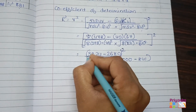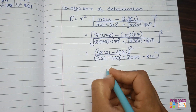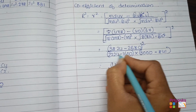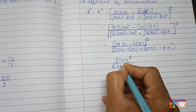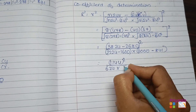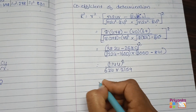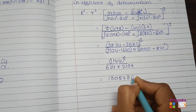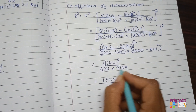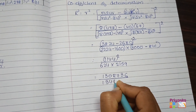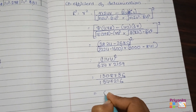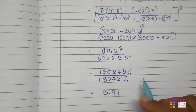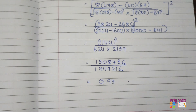Continuing the calculation: the numerator bracket gives 1144 under the square. Get them subtracted — here we get 624 and 2159. The square of the numerator is 1,308,736. Divided by the product of the two denominator terms, which is 1,347,216, we get 0.97 — which is very near to 1, meaning the regression model is reliable. Moving to the next question.